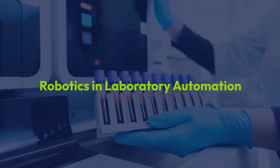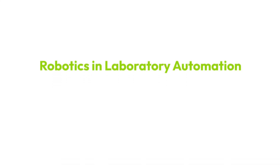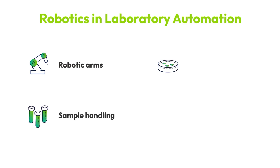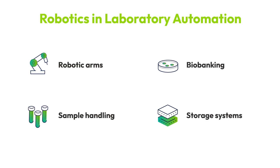Robotics in laboratory automation involves using robotic arms and other systems to manage physical tasks. From handling samples and reagents to managing biobanks and storage systems, robotics enhances precision and efficiency. This reduces the risk of contamination and allows laboratory personnel to focus on more complex tasks.